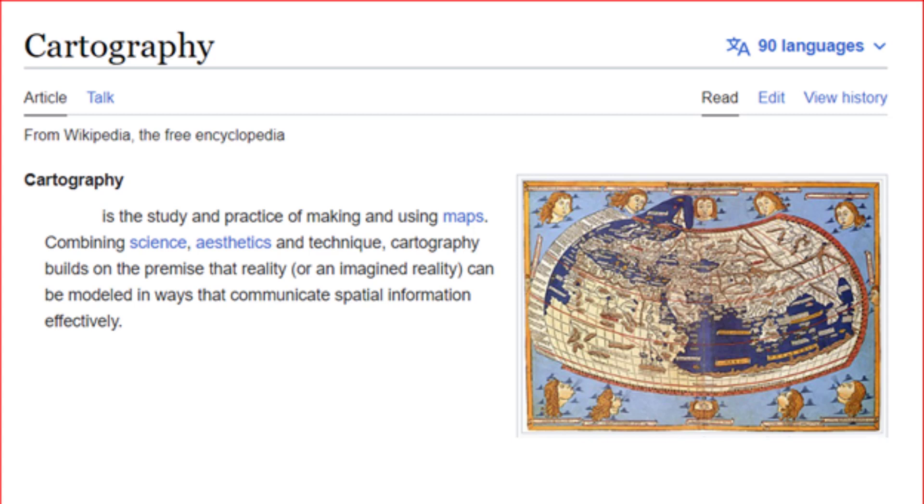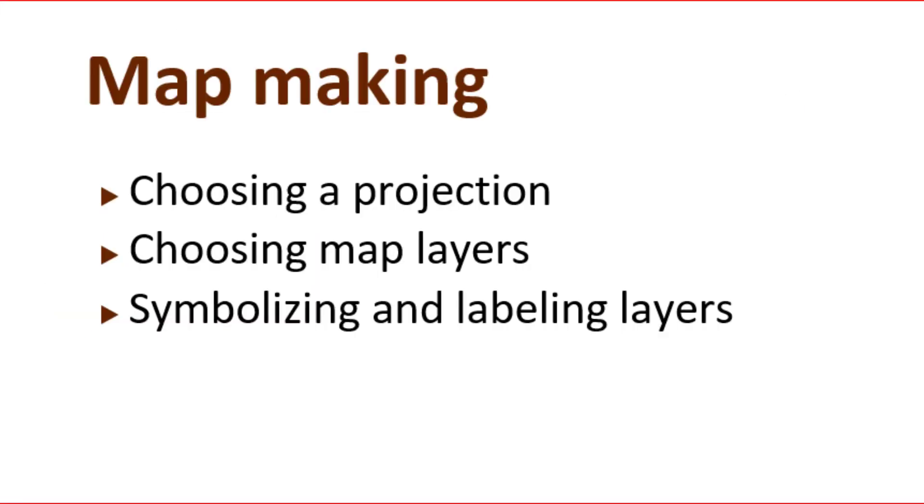There are some predefined steps when we are designing and making maps. The major ones are as shown in the screen: choosing a projection, choosing map layers, and symbolizing and labeling layers. In this section, we will be mainly focusing on symbolization and labeling. Let us say a few words before starting this section, and then we will see the graphic elements.